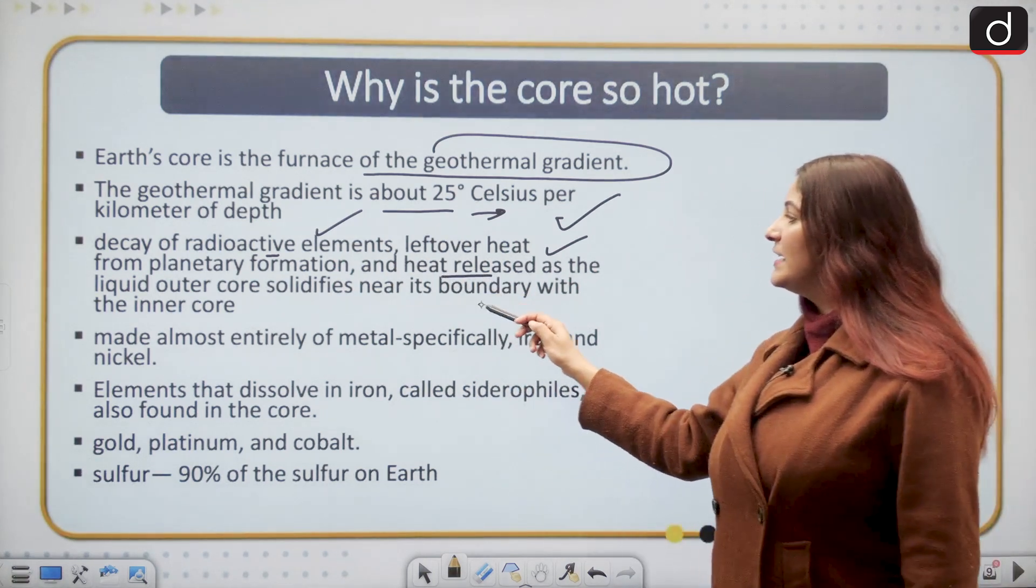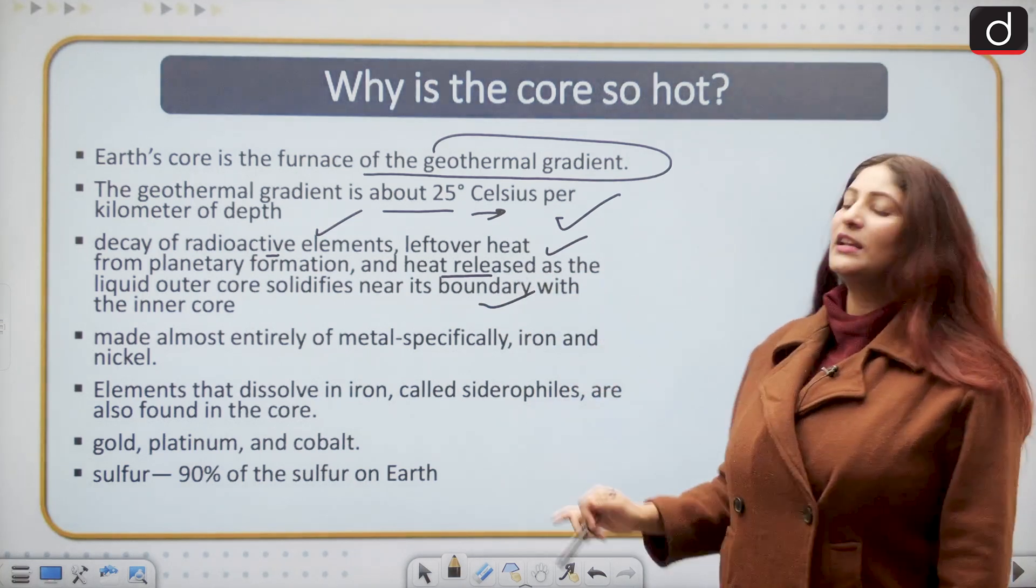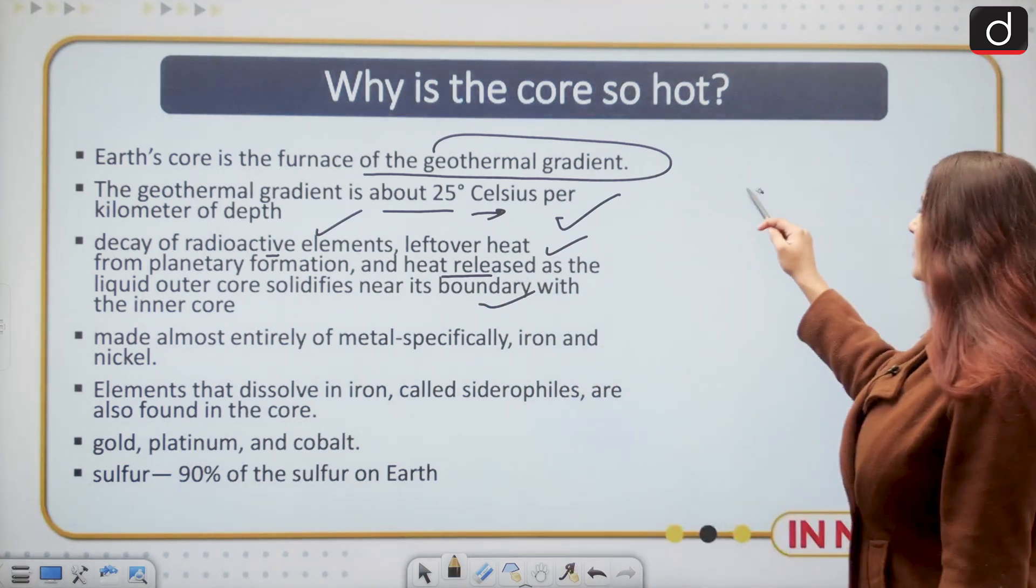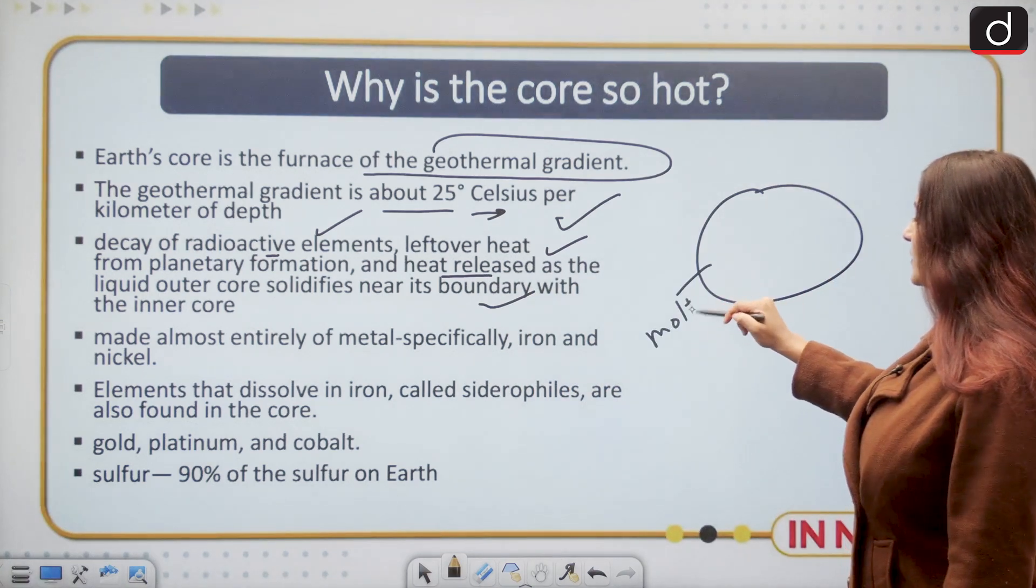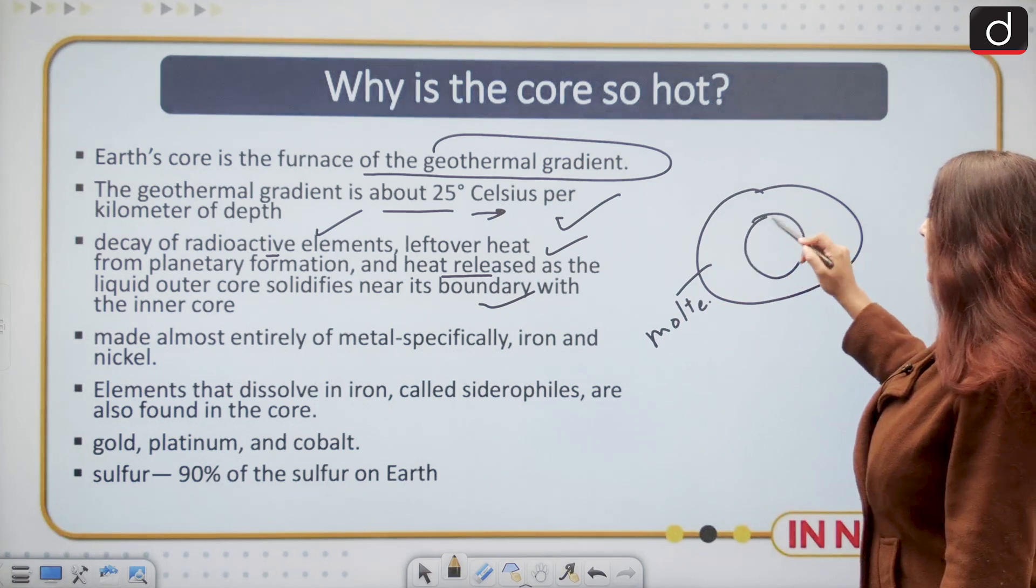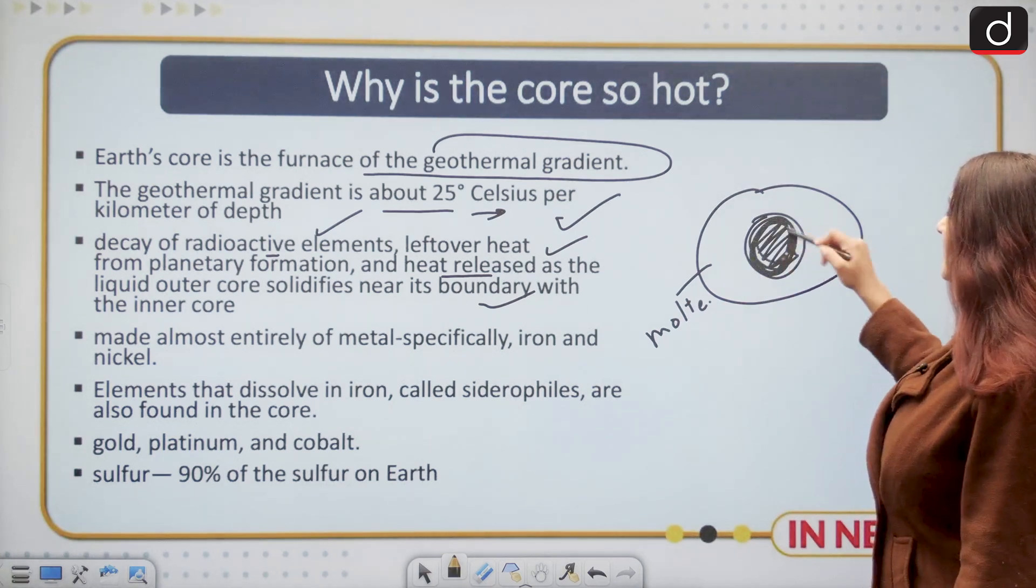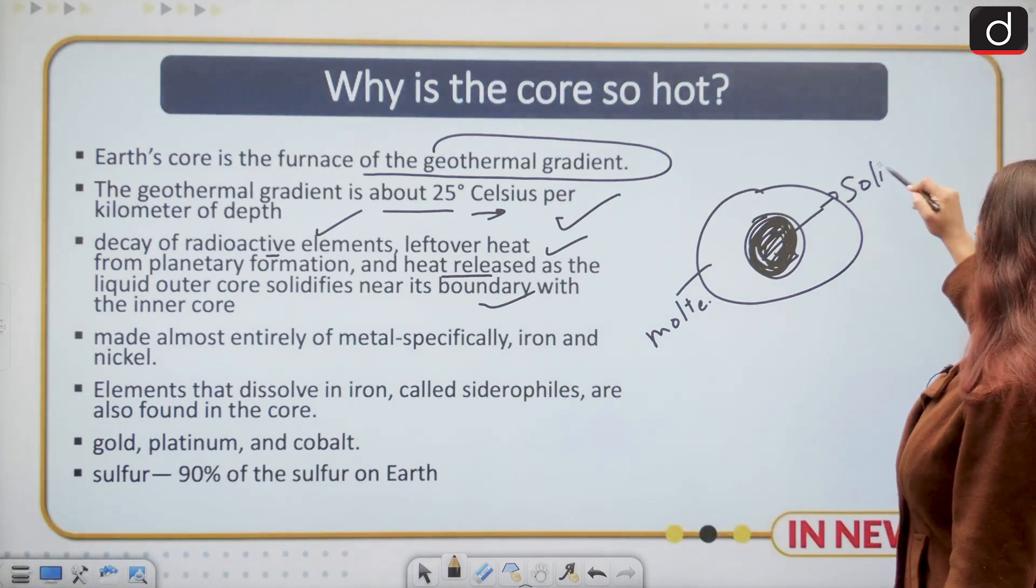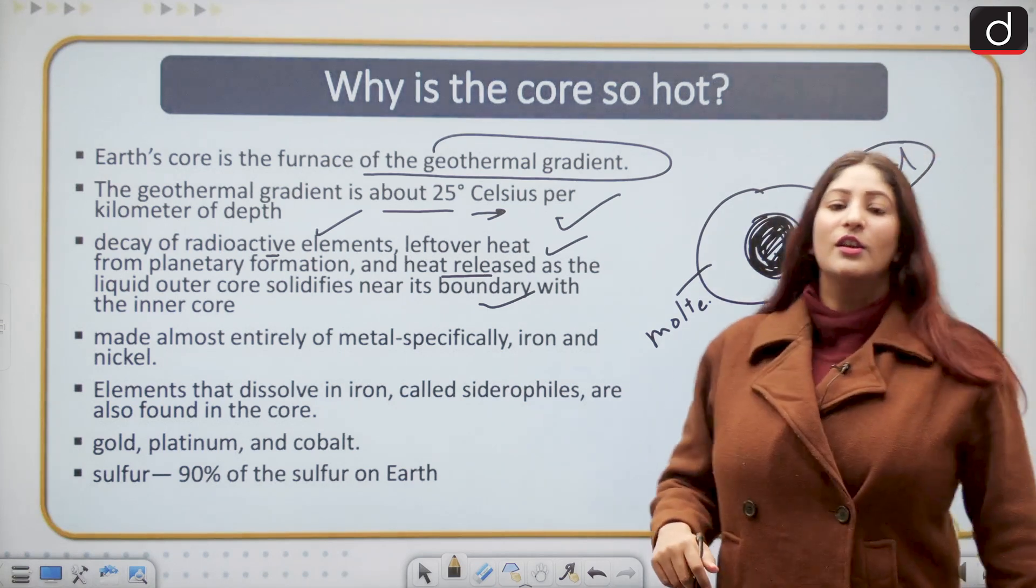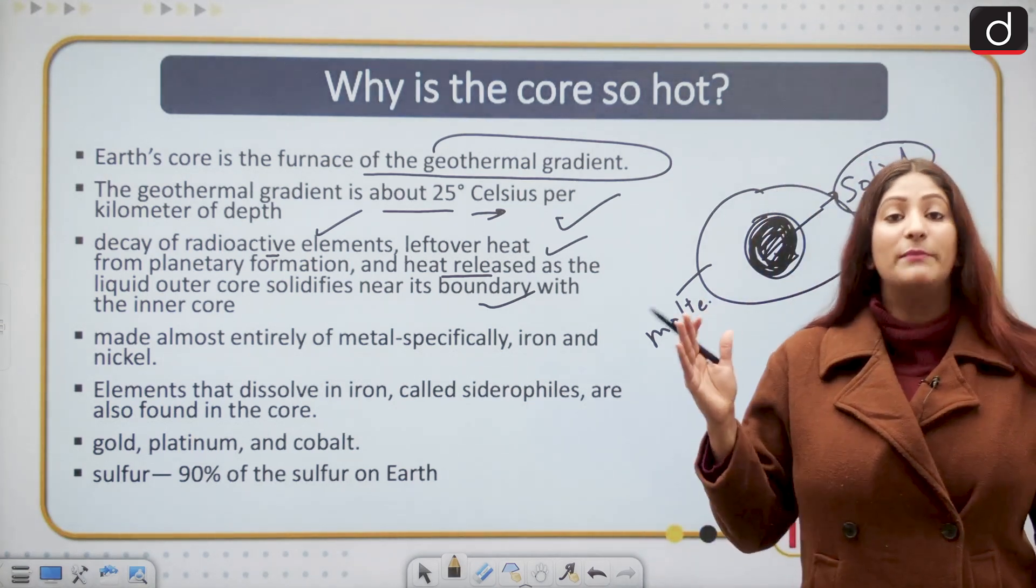The heat which is released as the liquid outer core solidifies near its boundary with the inner core. As we know, the outer core is the molten part but the inner core is the solid part. It's a planet inside a planet. The inner core might be the size of the erstwhile planet Pluto.